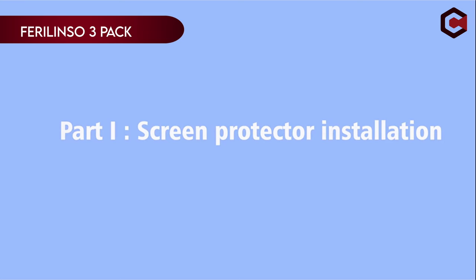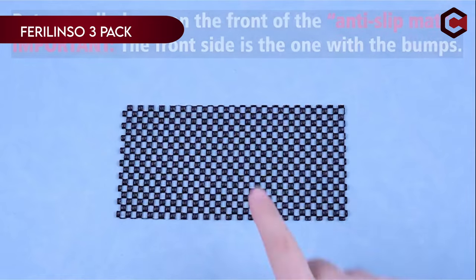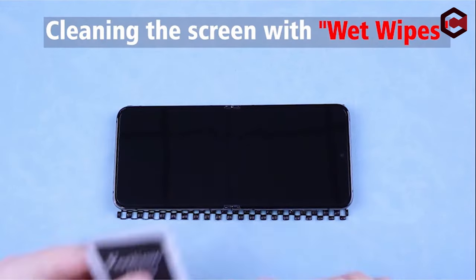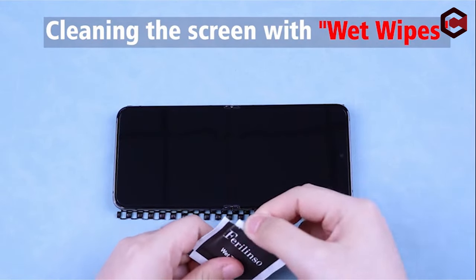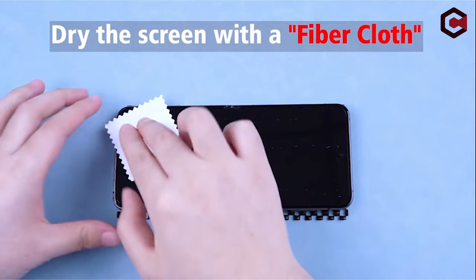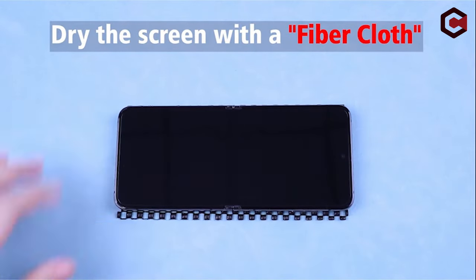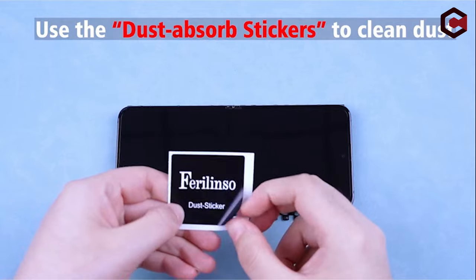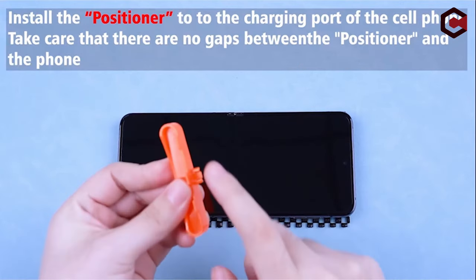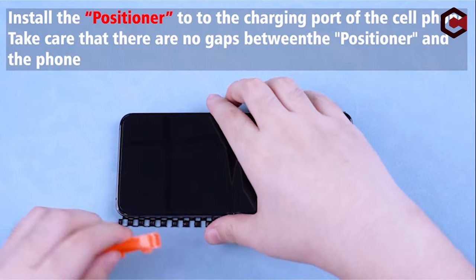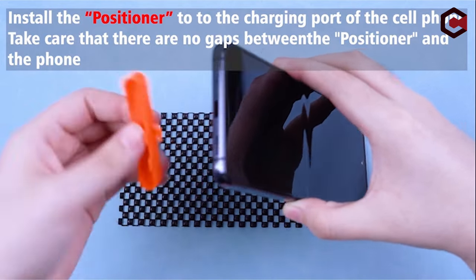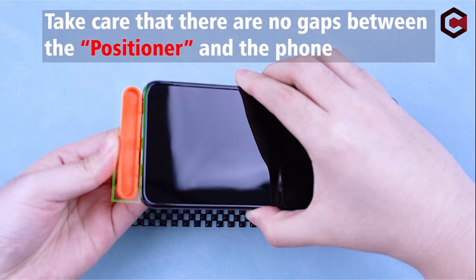On number 3, Ferralenso 3 Pack. Ferralenso's 3 Pack screen protectors for the Samsung Galaxy Z Flip 6 offer premium protection and advanced features designed to enhance your phone's durability and usability. Crafted from aerospace-grade materials fused with nanoceramics and awarded SGS certification, Ferralenso's screen protectors are 10 times stronger than standard options. They effectively resist scratches, bumps, and drops encountered in daily use, reducing the need for costly repairs.